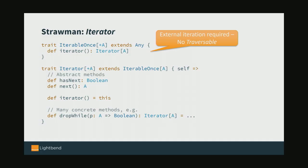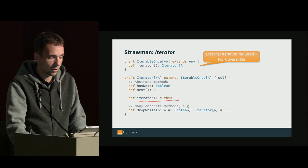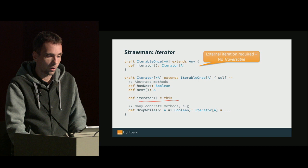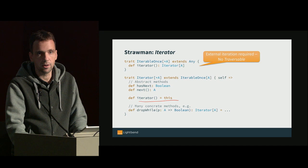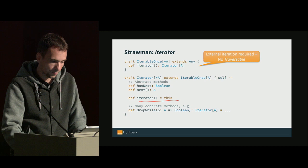Let's look at the new implementation. We start with a trait IterableOnce, which has a method to get an iterator. Traversable is gone because we didn't really need it, but we have IterableOnce because we want to abstract over Iterator and Iterable. IterableOnce only allows you to get a single iterator and iterate a single time. So Iterator extends IterableOnce with the usual methods, and if you call iterator on it, it returns itself.